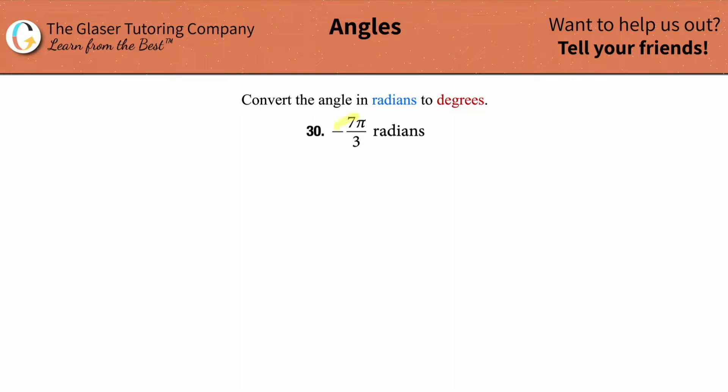So let's focus on converting negative 7 pi over 3 radians into degrees. So how do we do this? We need to know a known relationship between the two units.